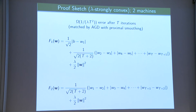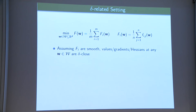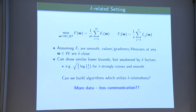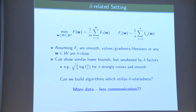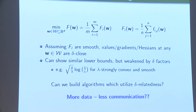Next, the delta-related setting: we don't assume data was necessarily partitioned at random, but we assume functions have similar values, gradients, or Hessians at any point in the domain. You can give lower bounds similar to the ones shown earlier, but with delta factors making them weaker. The question is whether we can get algorithms that utilize the delta-related setting and require less communication depending on delta. When we have lots of data and concentration of measure effects, delta becomes smaller, meaning more data reduces the required communication.